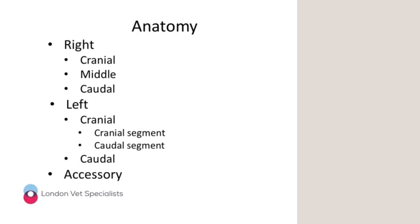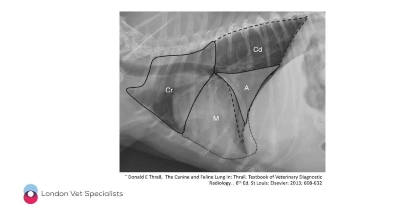Before we do that, we need to know a little bit about the anatomy of the lungs. We've got a right hemithorax and a left hemithorax. In the right hemithorax, we've got the right cranial, the right middle, and the right caudal lung lobes, each supplied by a lobar bronchus. On the left, we've only got the cranial and the caudal lung lobe. The left cranial lung lobe can be split into a cranial segment and a caudal segment, which branch off the left cranial lobar bronchus. And then we've got the accessory lung lobe.